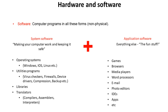When thinking of software, again there are two very broad categories. At a really simple level, you can think of system software as being the stuff which makes your computer work and keeps it safe, whereas application software is everything else.